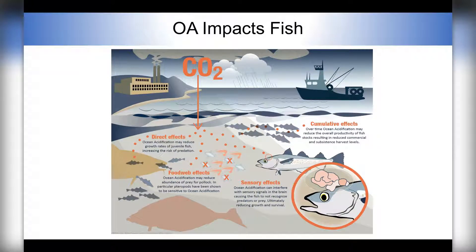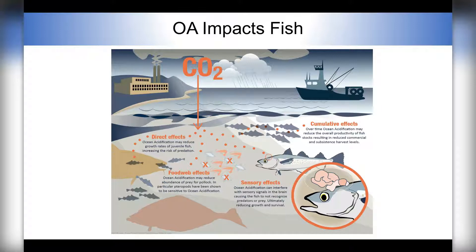The global oceans currently absorb about 25 percent of annual human-generated CO2 emissions, thus providing a climate mitigation service to us by reducing the effects of climate change. However, this service comes at a cost, and that cost is ocean acidification. As the oceans absorb CO2 from the atmosphere, this carbon dissolves in seawater and through a cascade of chemical changes, lowers the pH and carbonate mineral saturation states.